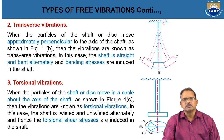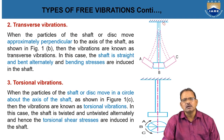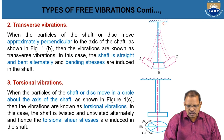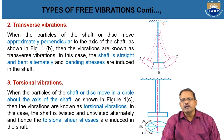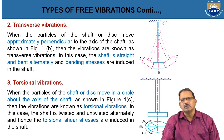Torsional vibrations. In torsional vibrations, the shaft or disc moves in a circle about the axis of the shaft, as shown in figure. These vibrations are known as torsional vibrations. In this case, the shaft is twisted and untwisted alternately. Hence, torsional shear stresses are induced in it.